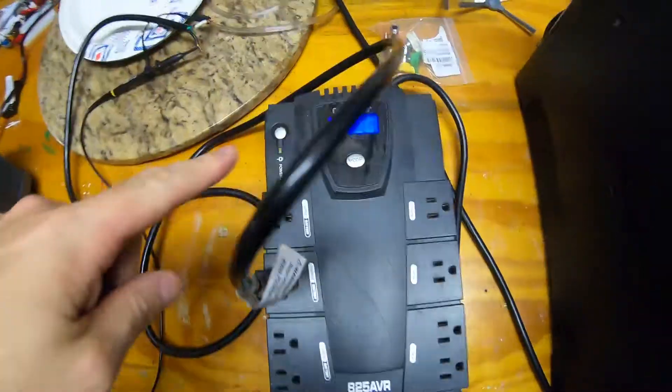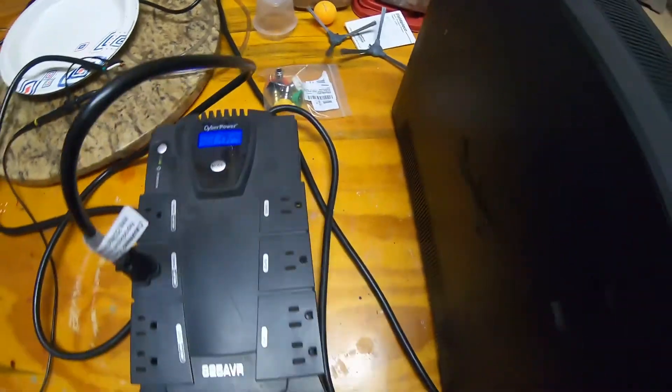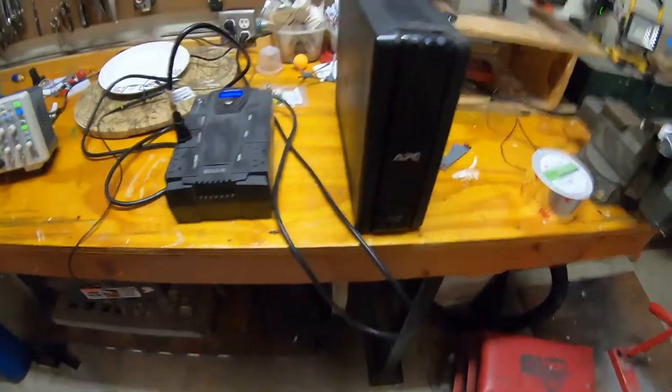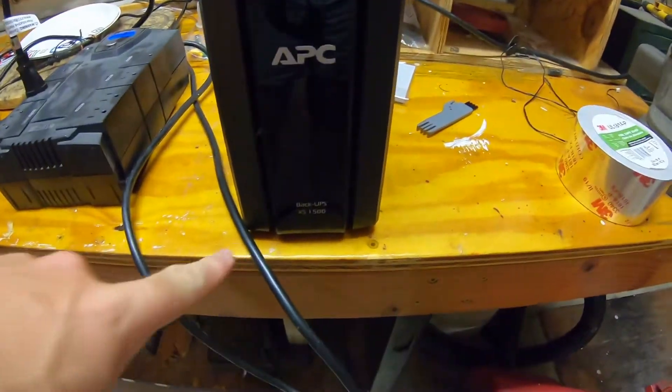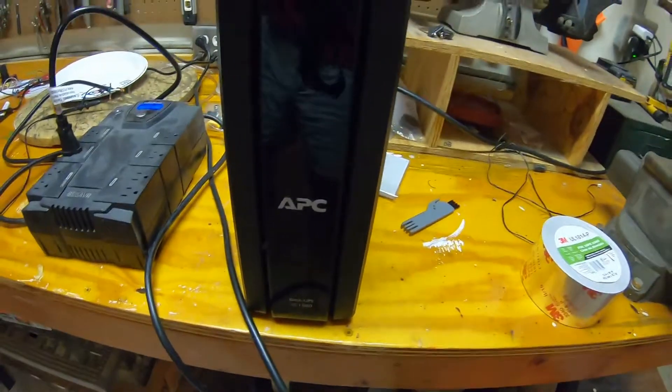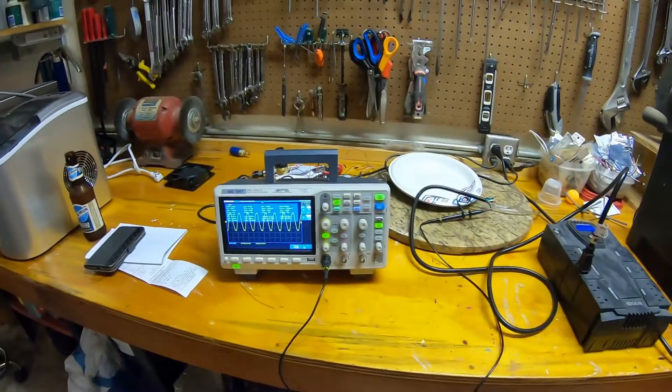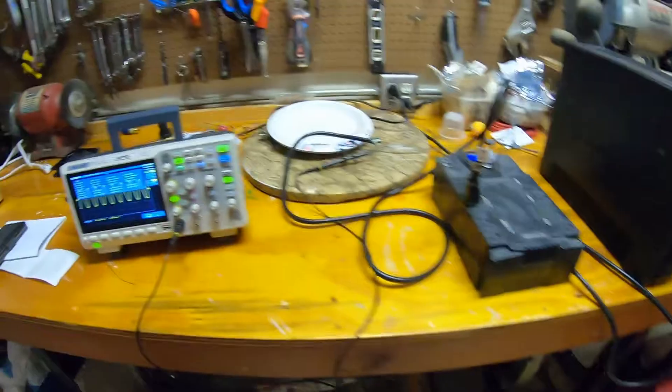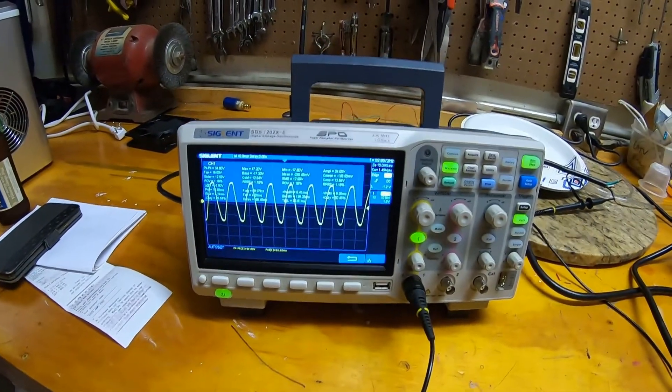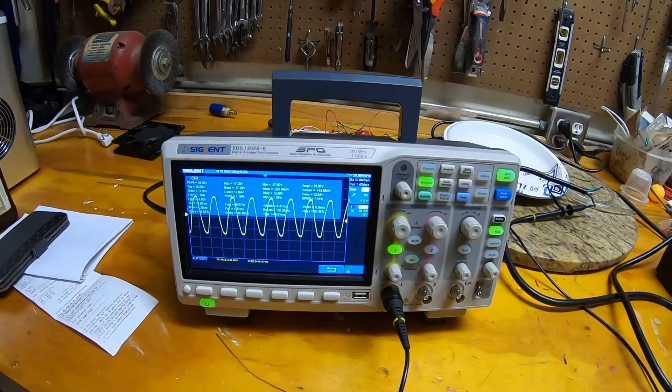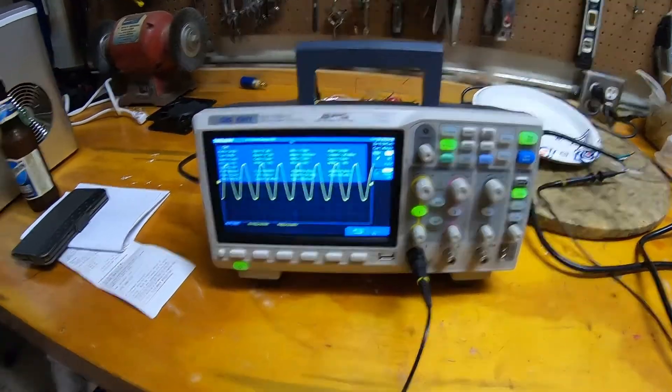I have ordered a true sine wave unit by this same company CyberPower. It was about $200 for a capacity similar to this 1500 volt amps so we'll see how that performs on the oscilloscope. True sine wave we would expect a waveform similar to this not too different from this. So that should be here in a couple days and we'll pick it up then.